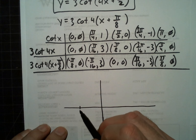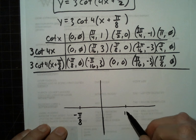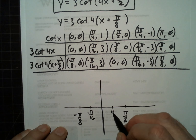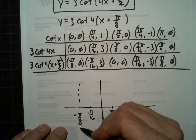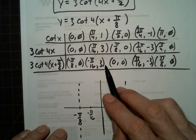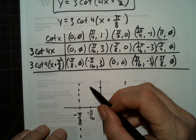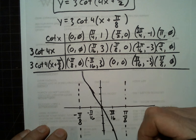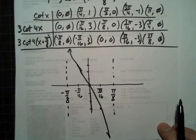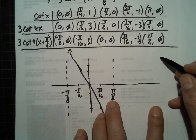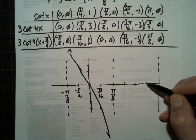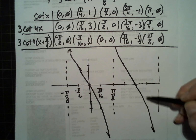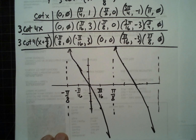Negative pi over 8 to pi over 8. We have asymptotes here. Negative pi over 16 would go to 3. That whole length repeated here. And that's it for today.